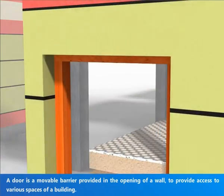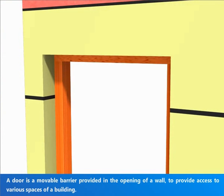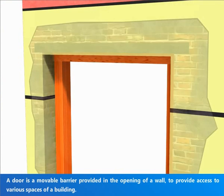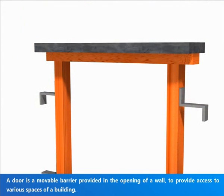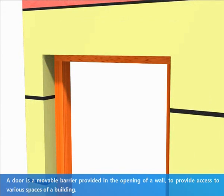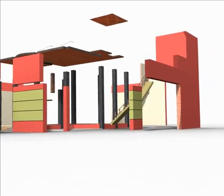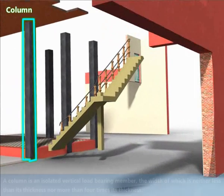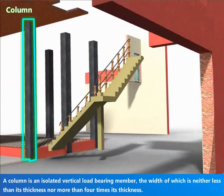A door is a movable barrier provided in the opening of a wall to provide access to various spaces of a building. A column is an isolated vertical load-bearing member, the width of which is neither less than its thickness nor more than four times its width.